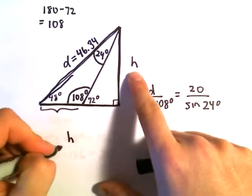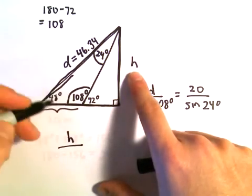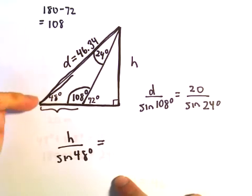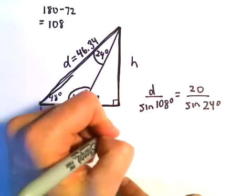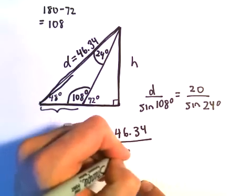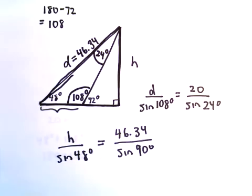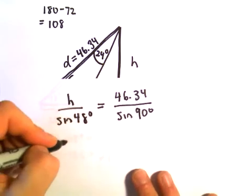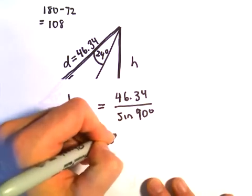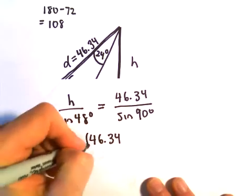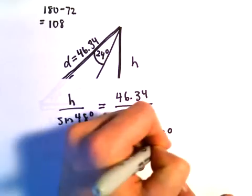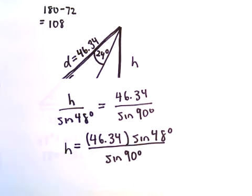We're trying to figure out the height h. So h over sine of 48 degrees would equal, we can use our 46.34 over sine of 90 degrees. And now we're pretty much there. We can just multiply both sides by sine of 48 degrees. So we'll get 46.34 times sine of 48 degrees over sine of 90 degrees.